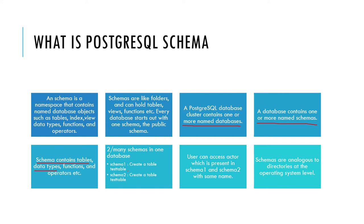If I am connected to a particular database, I can create multiple schemas — schema one, schema two, or any number of schemas. For example, I can create a table called 'actor' in schema one and another table with the same name 'actor' in schema two. So two schemas with different names but the same table name is perfectly valid.